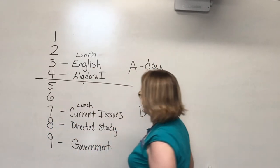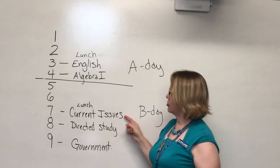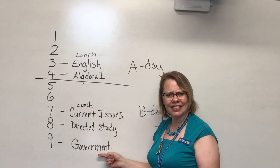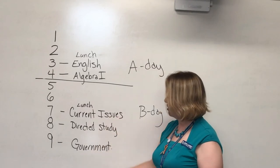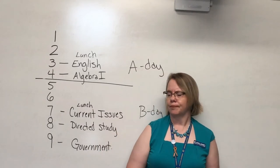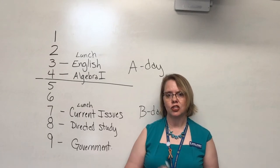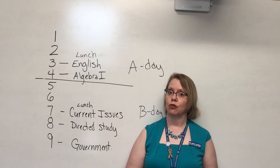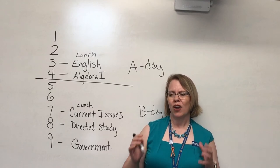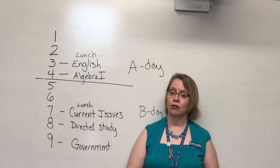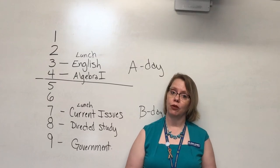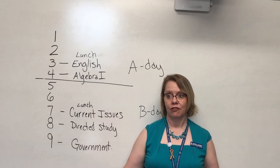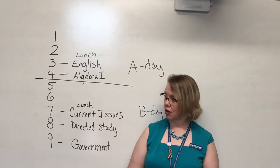The other thing that was confusing for some is they're taking current issues and they have this block nine, and they said do they have five classes, how does that all fit together? So how it works is this: the government class is a senior level, as in 12th grade class, it's a one semester course. We're having students take that course in eighth grade, four years before they typically take it.